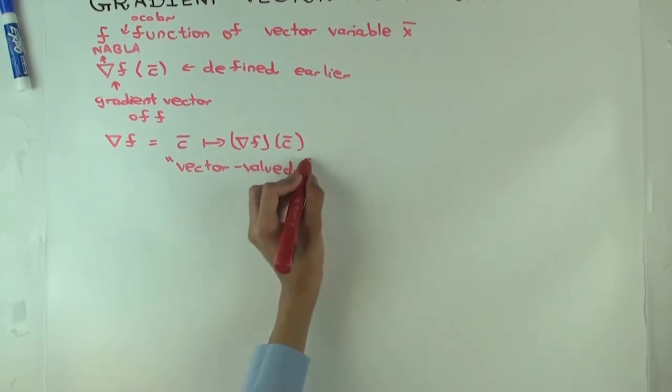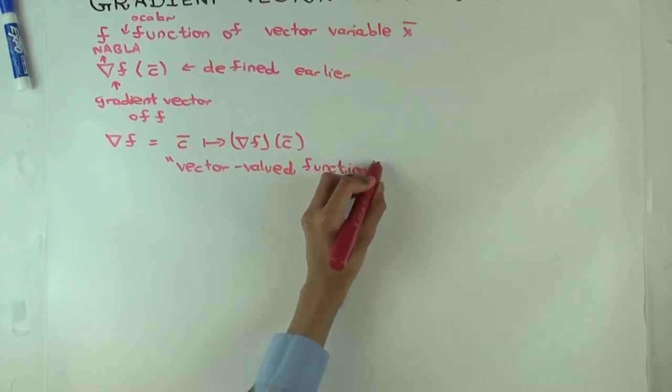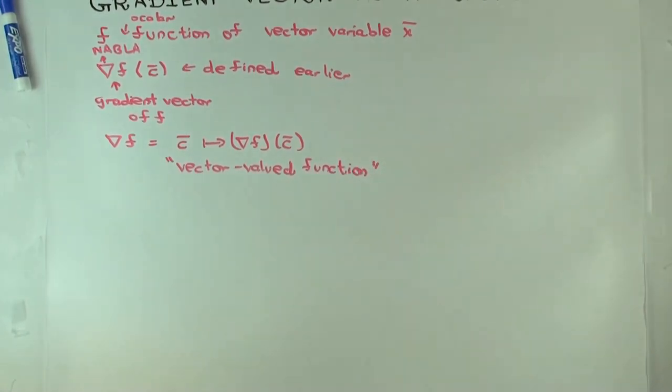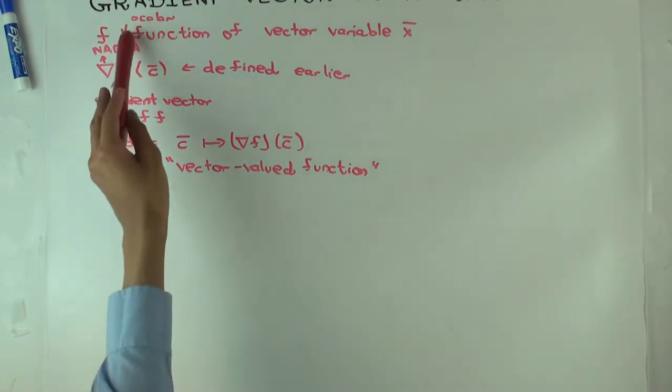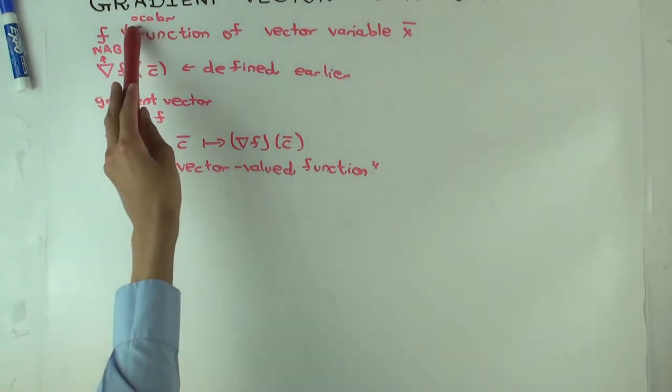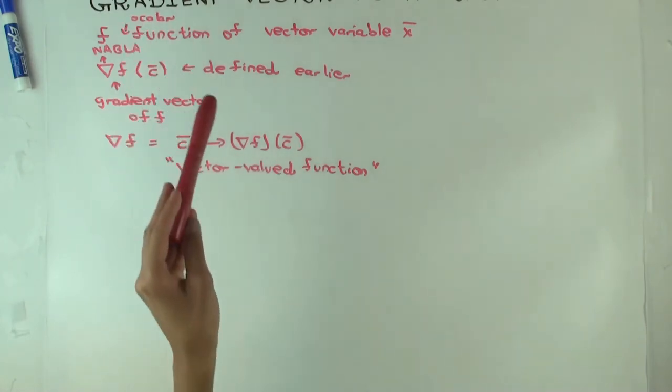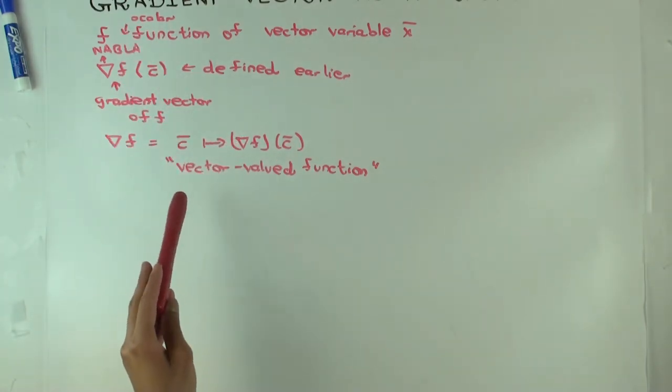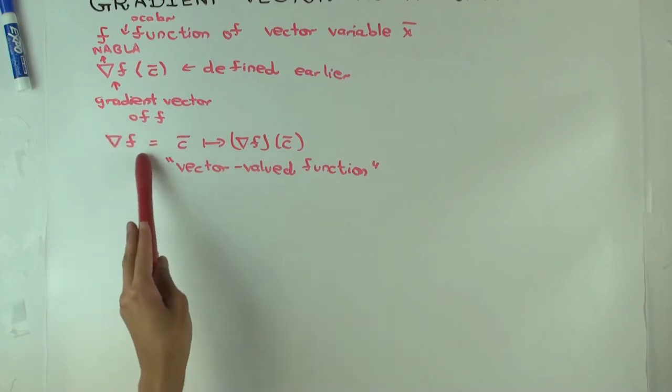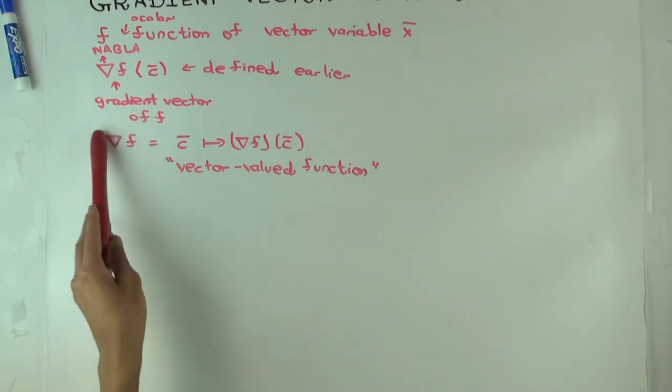It's a vector-valued function. And what kind of vectors are there in the output? The same dimension as the vectors in the input. Okay, so what's interesting here is you have a function. The original function was a scalar function. But the new function, the derivative,